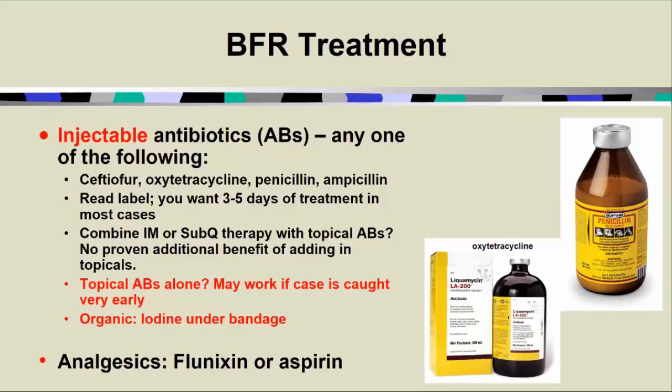If you are an organic dairy, you've got to catch this early because for the cow to stay in the organic herd you can't use systemic antimicrobials. So you have to be very diligent in catching this disease early and trying to get the infection stopped with topical iodine before the bacteria penetrate into the deeper parts of the interdigital space where topical therapy won't reach. Analgesics — flunixin meglumine or aspirin — are often appropriate for these animals because of the severity of their pain.